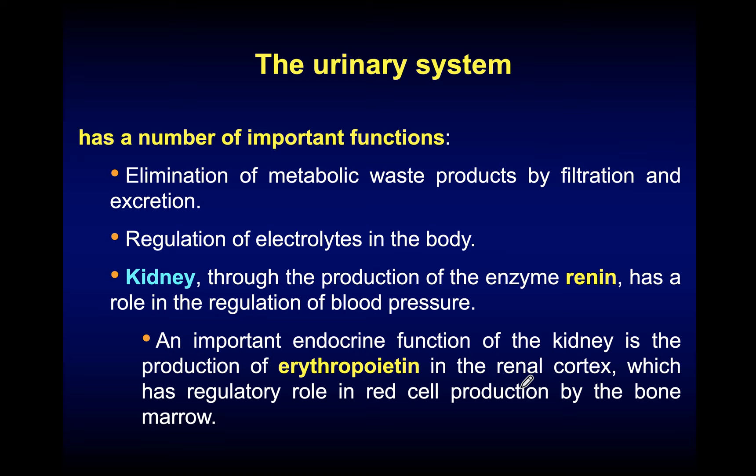Another function is the regulation of electrolytes in the body. The third function is that the kidney serves as an endocrine organ through the production of two main hormones: renin, which plays a role in the regulation of blood pressure, and erythropoietin, which regulates red blood cell formation by the bone marrow.